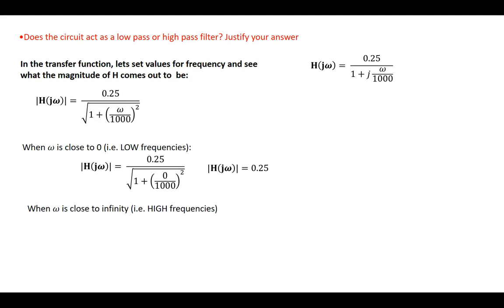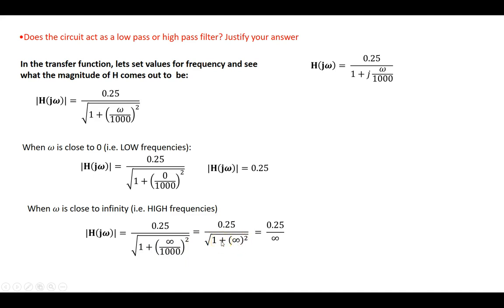Now let's check high frequencies. If omega approaches infinity, the denominator becomes the square root of infinity squared plus 1, which is approximately infinity. So a small number divided by infinity gives a value very close to 0. As frequency increases toward high values, the transfer function magnitude goes toward 0. At low frequencies the signal passes, and at high frequencies it does not — so this circuit works as a low-pass filter.